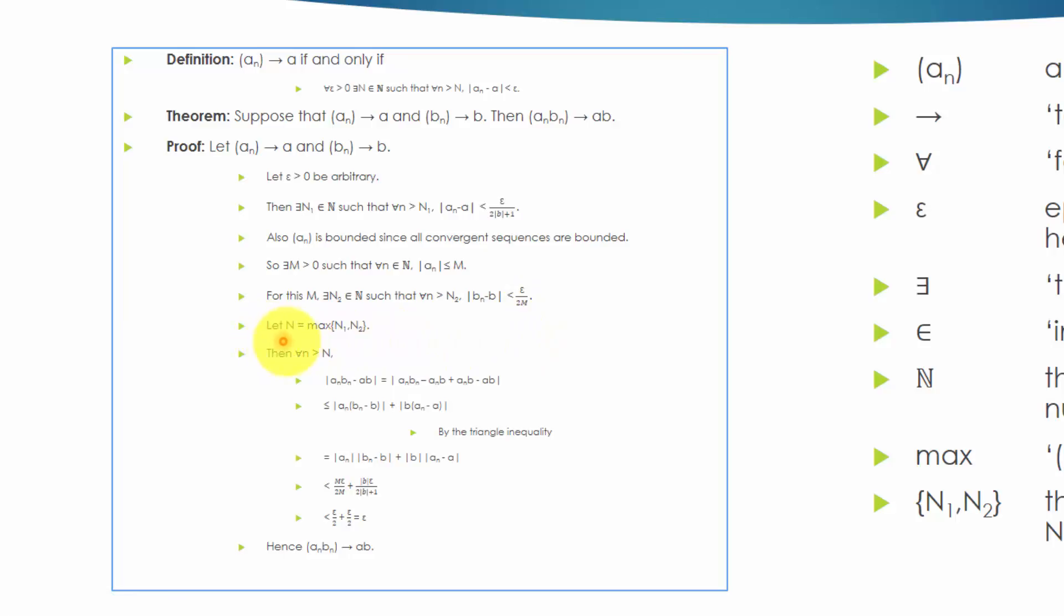Let big N be the maximum of the set N1 and N2. Then for all small n greater than big N, the absolute value of A-N times B-N minus A times B is equal to the absolute value of A-N times B-N minus A-N times B, plus A-N times B minus A times B,